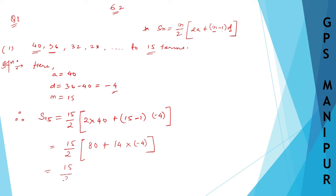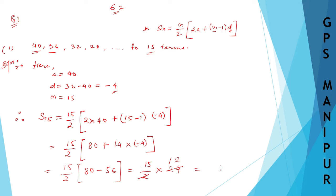Now we have 15/2 × (80 minus 56). 80 minus 56 equals 24. So it becomes 15/2 × 24. The 2 in the denominator cancels with 24, giving 12. So 15 × 12 equals 180. Therefore, S15 = 180 is the sum. The answer is 180.